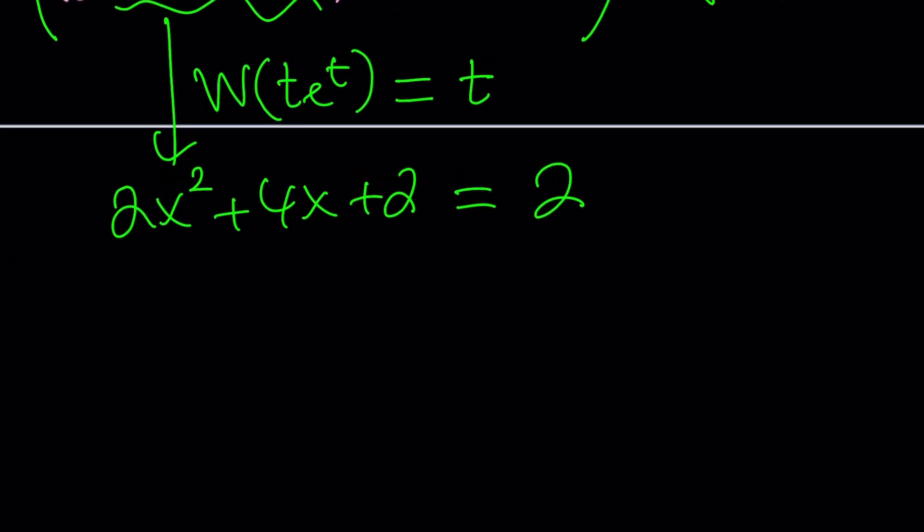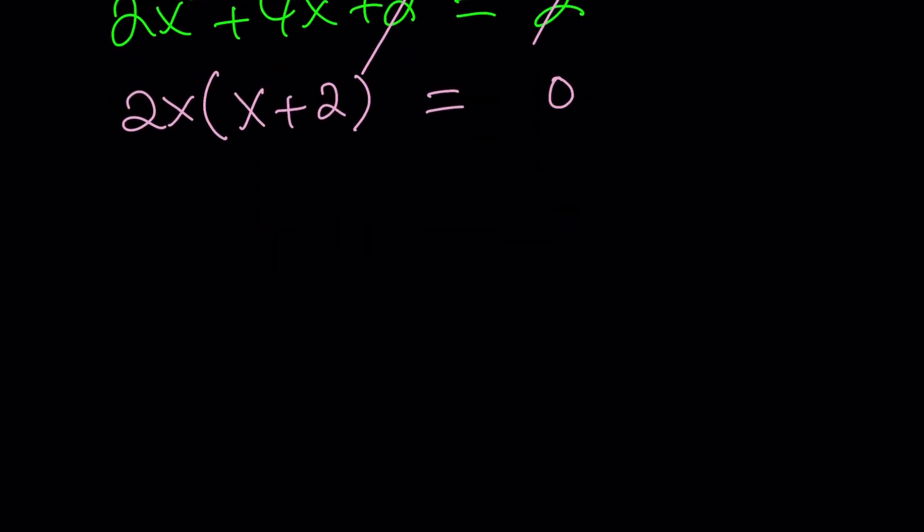Moreover, the constant term cancels out, leaving us with a very simple quadratic. Factor out 2x, you're going to get x plus 2 equals 0. This is the fun part. You're going to get two solutions. One of them is x equals 0. The other one is x equals negative 2. First question: Are these the only solutions? Second question: Are both solutions valid? How can we tell?